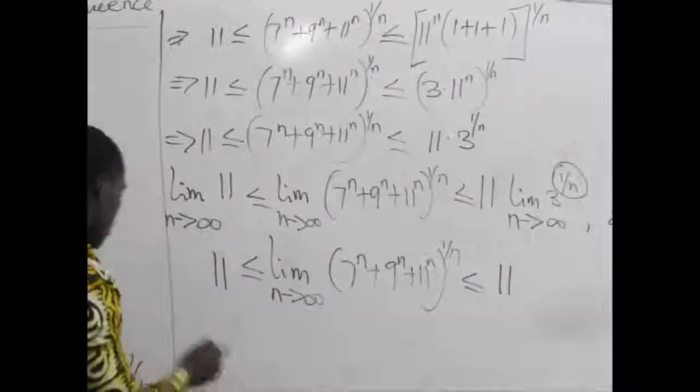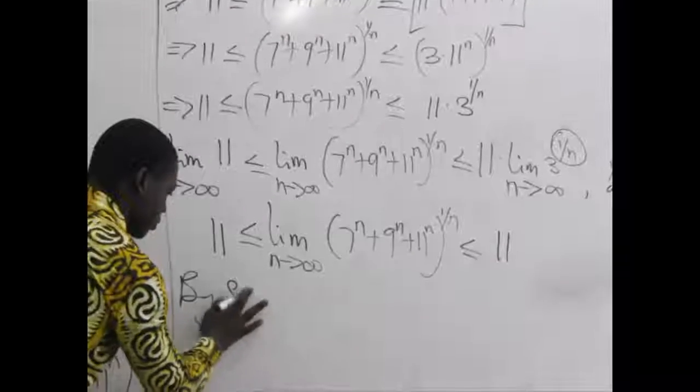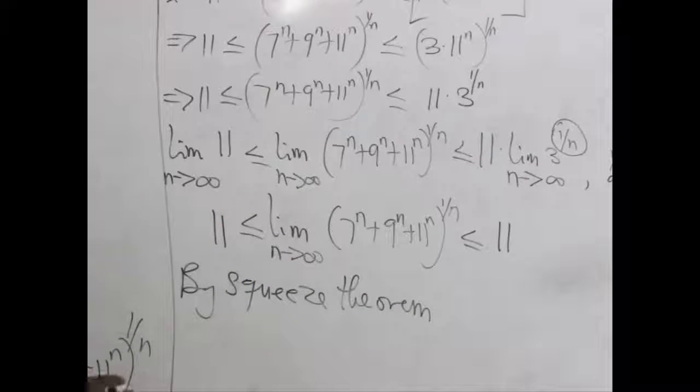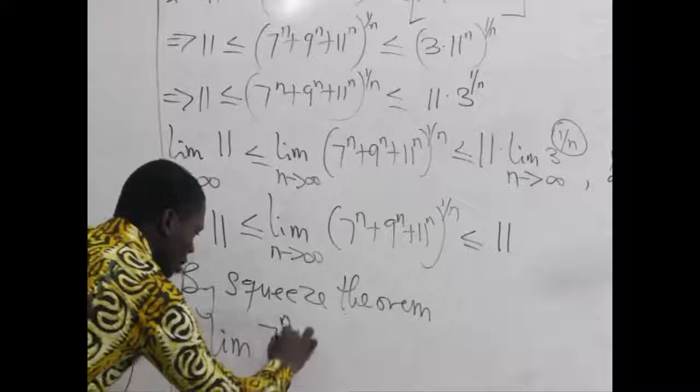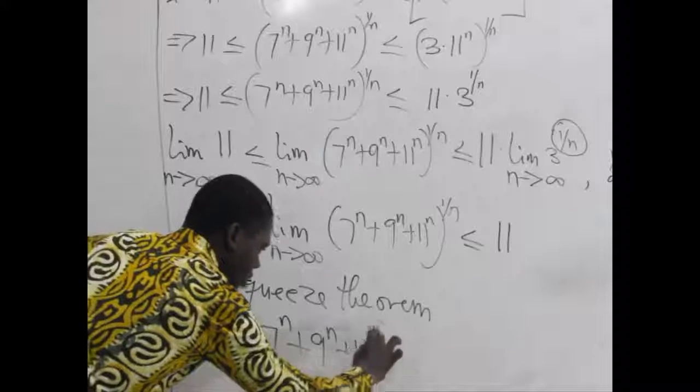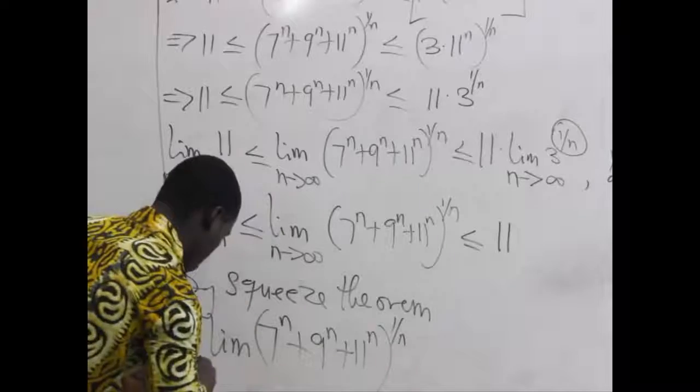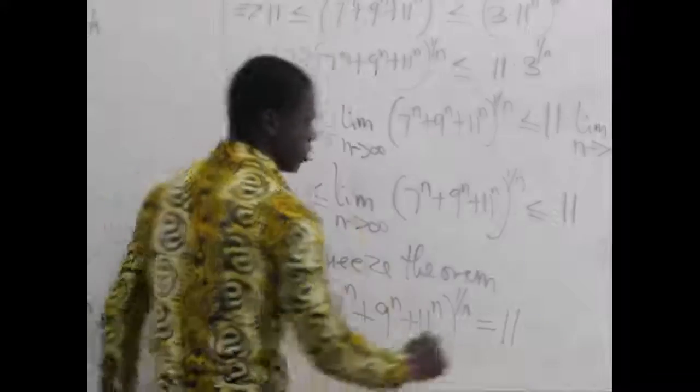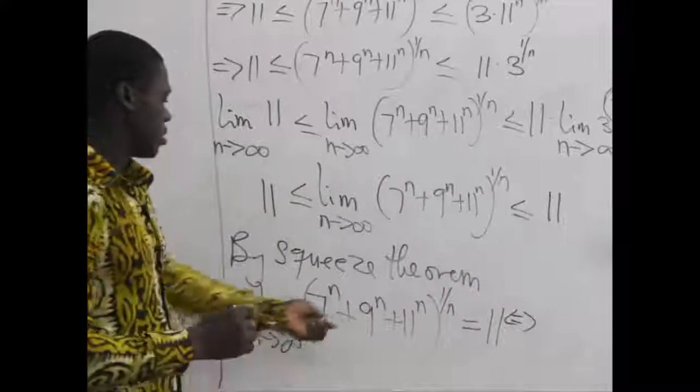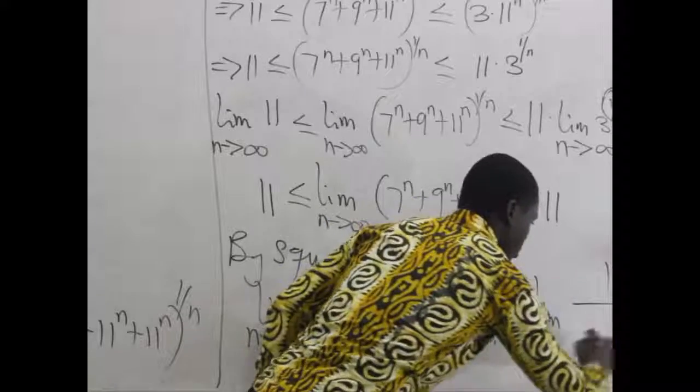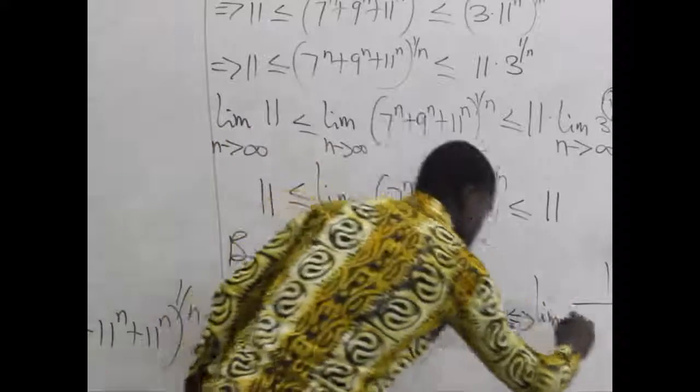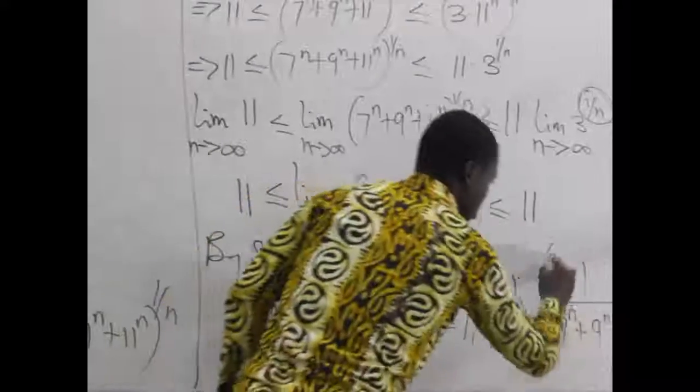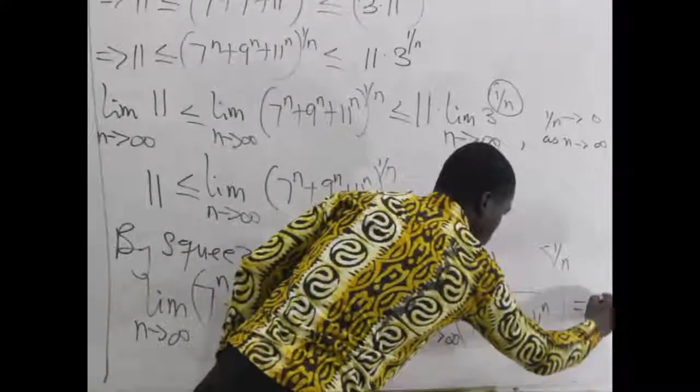So we can confidently conclude that by the squeeze theory, the limit of (7^n + 9^n + 11^n)^(1/n) as n approaches infinity is equal to 11. And it's equivalent to writing that the limit of 1/(7^n + 9^n + 11^n)^(1/n) as n approaches infinity, all this will be equal to 1/11.